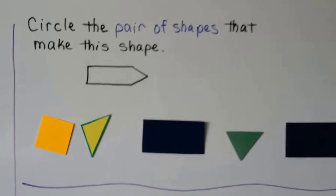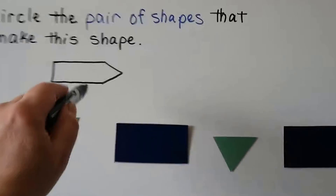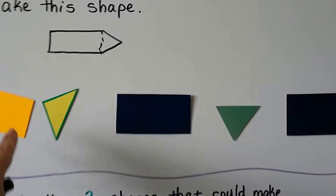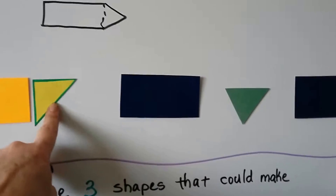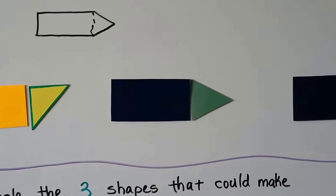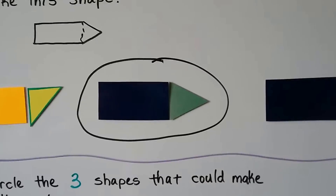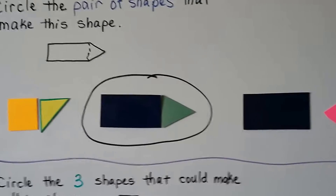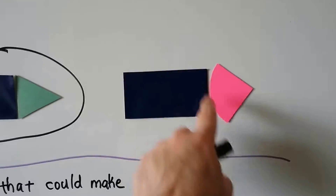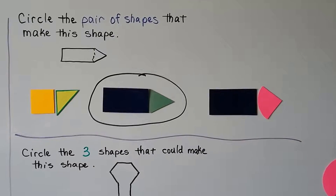Circle the pair of shapes that make this shape. I see a rectangle and a triangle. A square wouldn't be big enough and wouldn't quite make that shape. If we put the rectangle and this triangle together, that would make it. Pair means two — one, two shapes. This other option is part of a circle and a rectangle, and it curves on this edge, so that's not quite it. So we could use a rectangle and a triangle.